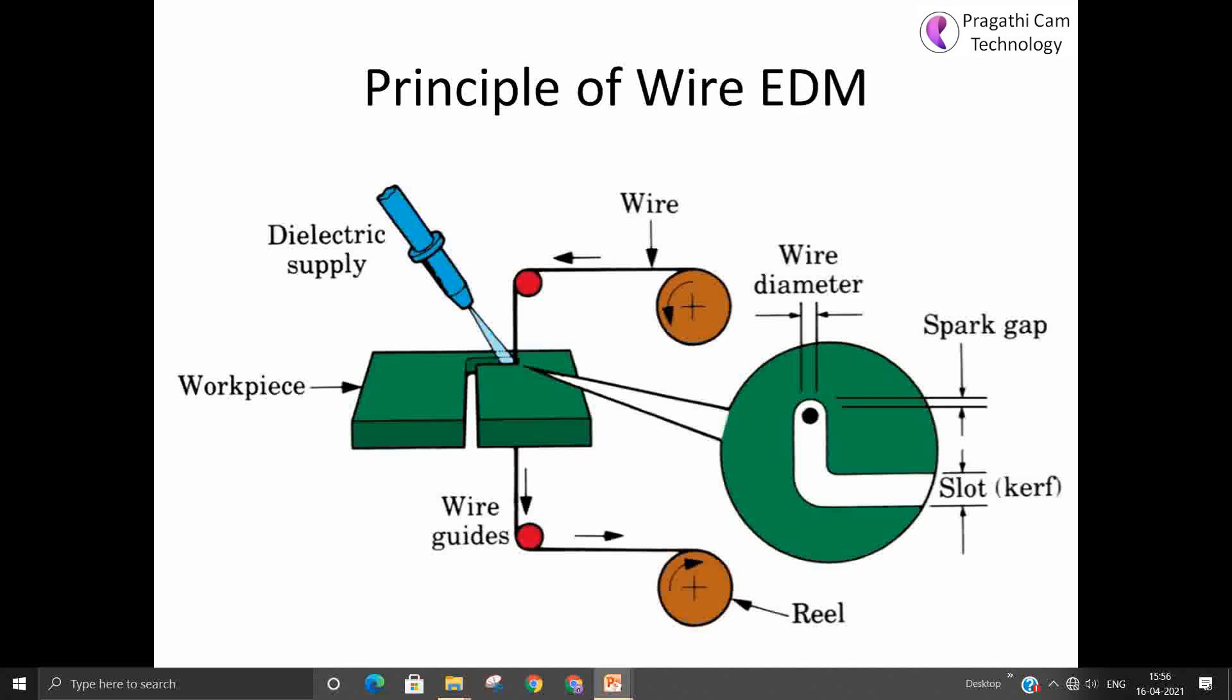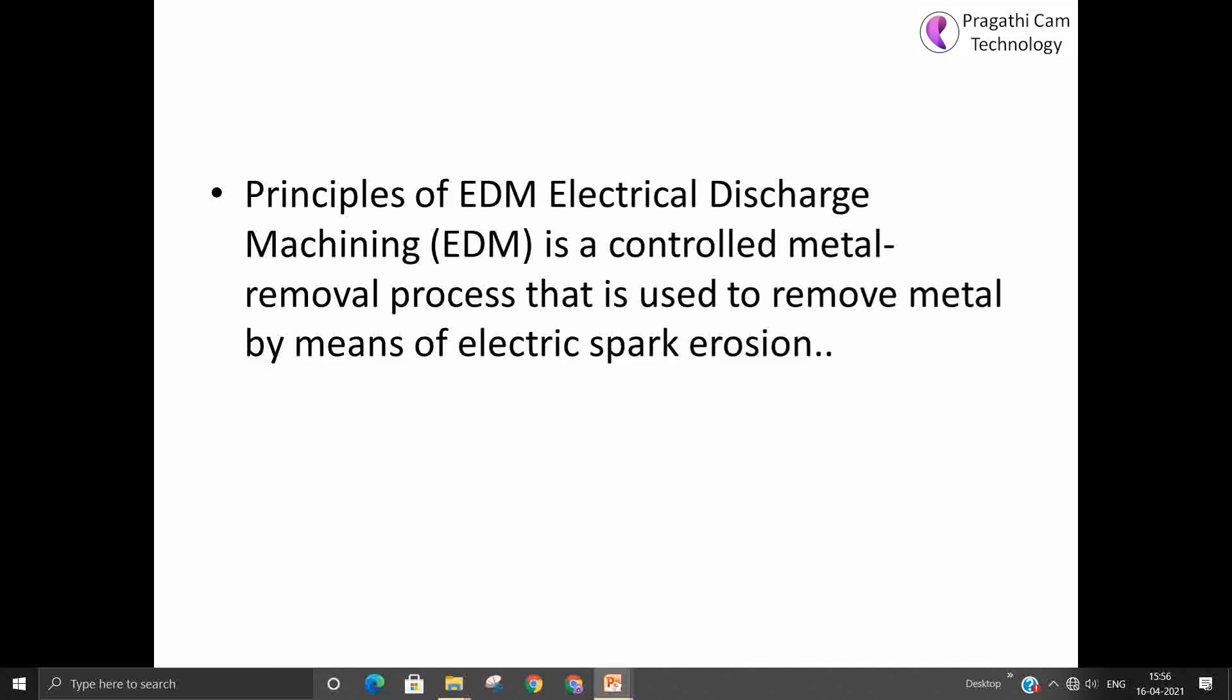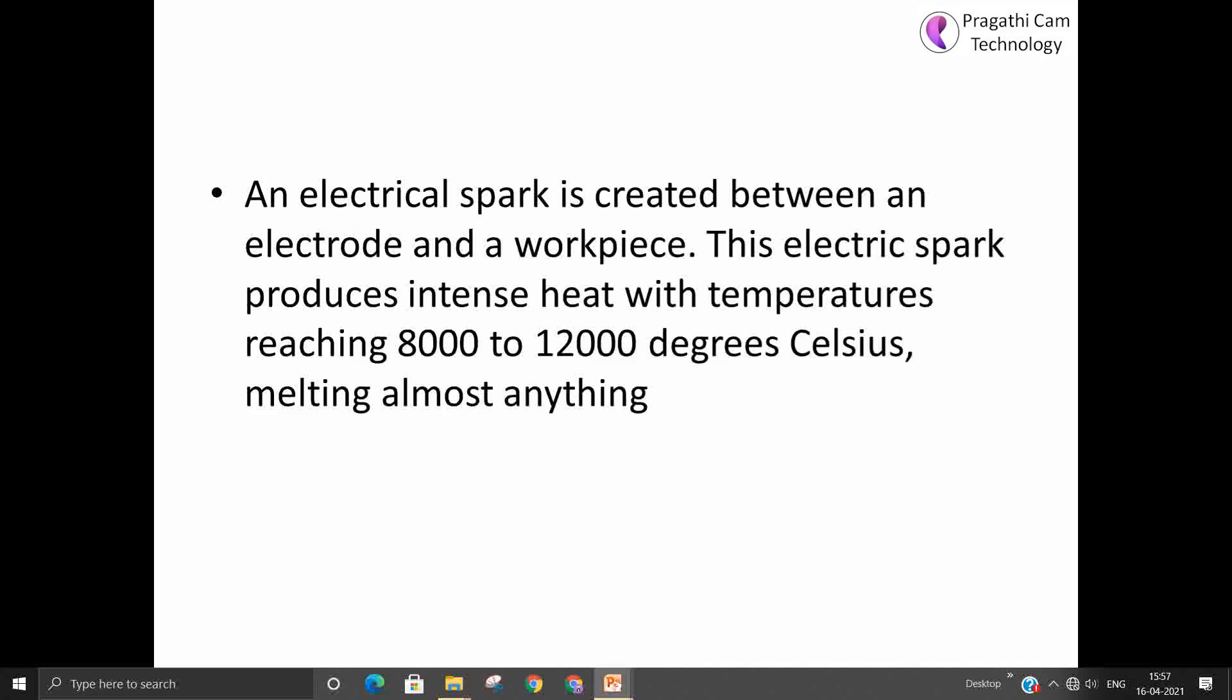So this is the principle of EDM, electric discharge machine. EDM is a controlled metal removal process that is used to remove the metal by means of electric spark erosion. The electrical spark is created between the electrode and the workpiece. This electric spark produces intense heat with the temperature reaching 8000 to 12000 degree Celsius, melting almost anything.